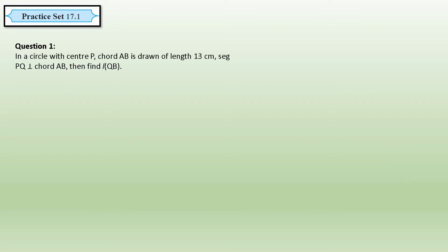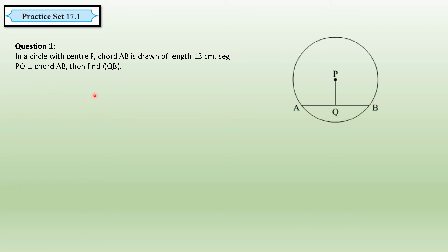Keeping these two properties in mind, let us move to practice set 17.1. Question 1 says: in a circle with center P, chord AB is drawn of length 13 centimeters. Segment PQ is perpendicular to chord AB. Find the length of QB. So AB is a chord of length 13 centimeters.